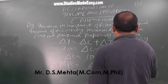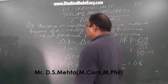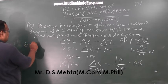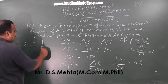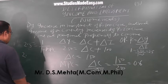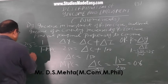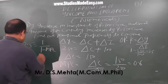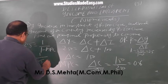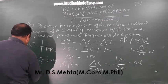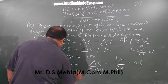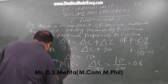अब 2.5 में सब value रख लीजिए। K की value हमने निकाल ली: 2.5 is equal to 1 upon 1 minus MPC। तो 2.5 minus 2.5 MPC is equal to 1। और 2.5 MPC हो जाएगा 2.5 minus 1 is equal to 1.5। और MPC आजाएगा।